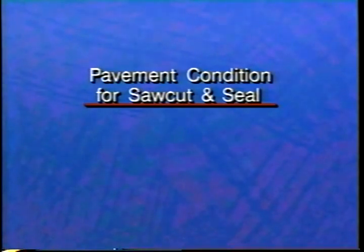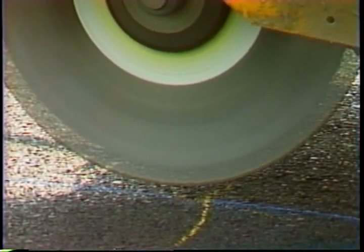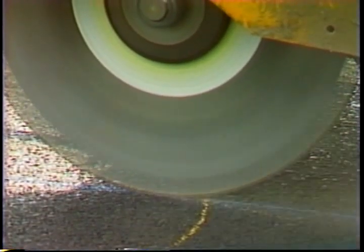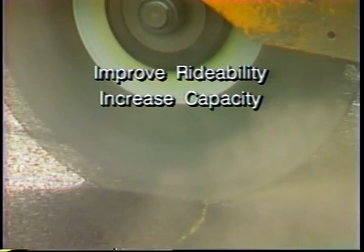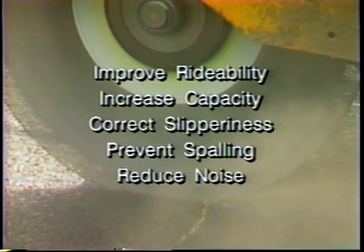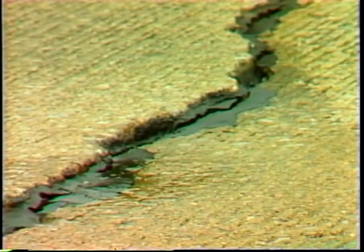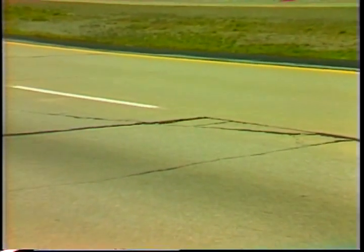To be a good candidate for this method, the existing concrete pavement must be structurally sound and have at least 40% of its structural life remaining. Saw cut and sealing is best suited for plain-jointed and jointed-reinforced concrete pavements being overlaid to improve rideability, increase structural capacity, correct slipperiness, prevent spalling, and reduce noise. If the pavement has joints that have completely failed, if there is excessive differential deflection at the joints, or if there is random cracking within the slabs, another rehabilitation approach should be taken.